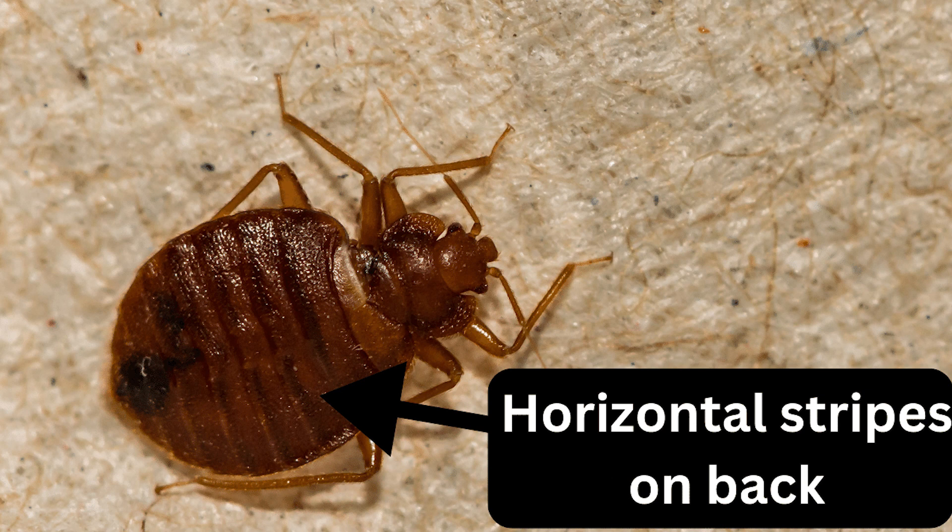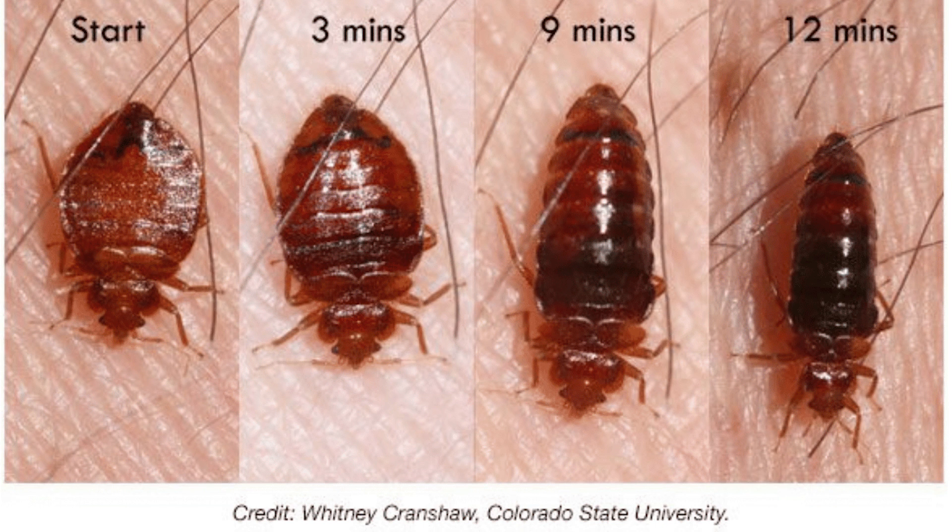One distinguishing feature of adult bed bugs is the presence of horizontal stripes or bands across their back, which are more noticeable in well-fed bed bugs. After feeding on blood, their bodies become engorged and swollen, changing both shape and color. They can increase in size by as much as 50 percent after feeding.